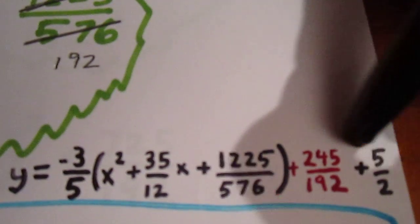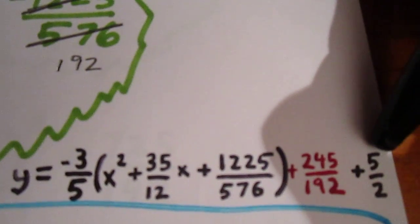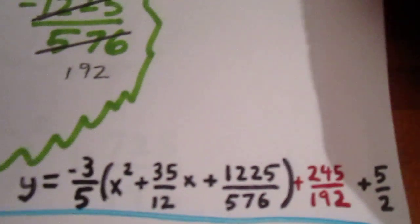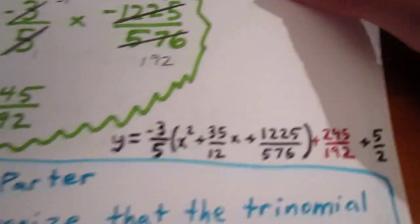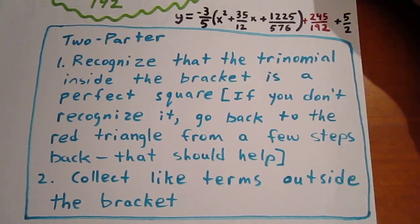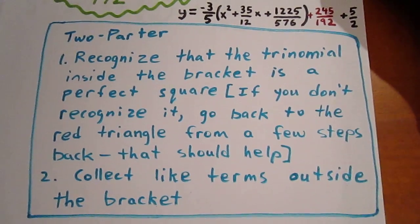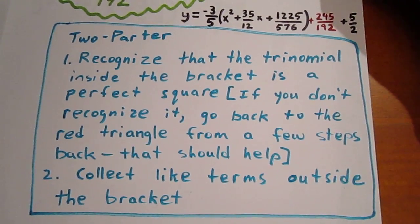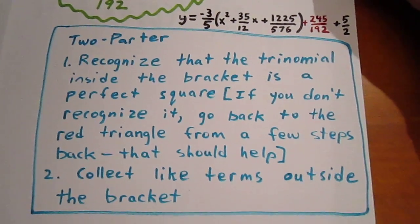All we have to now do is just add up these two terms using the fraction rules and we're going to be fine. We'll collect like terms. So, the two-parter says recognize the trinomial inside the bracket as a perfect square. If necessary, go back to the red triangle from a few steps back and collect like terms outside the bracket.